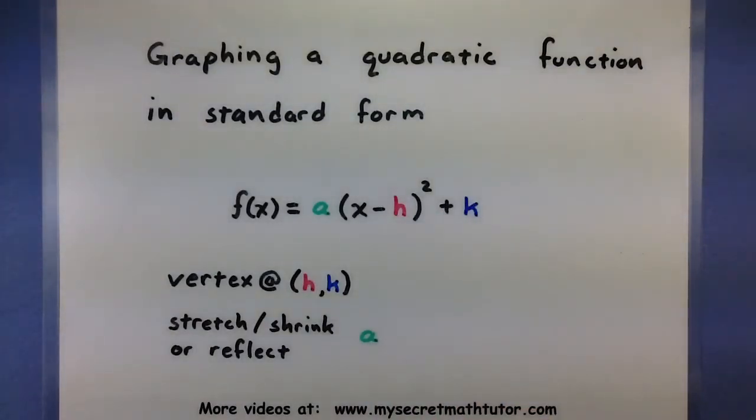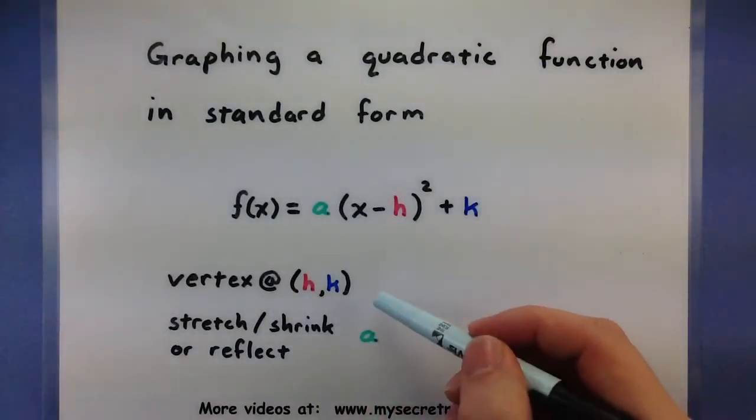So if we can take a quadratic and write it in this form, here's all of the information that we can just essentially read from looking at it. First of all, the values h and k will tell us exactly where the vertex is, the point h,k.